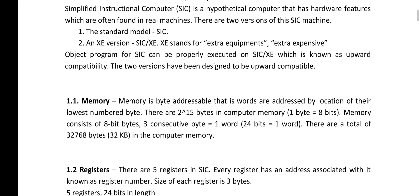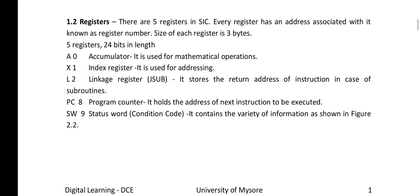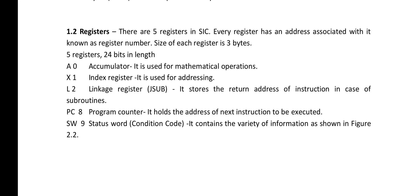The next component of SIC Machine Architecture is registers. There are 5 registers in SIC, and every register has an address associated with it known as a register number. The size of each register is 3 bytes — 5 registers with 24 bits in length. The first register is A with register number 0. A stands for accumulator, and this accumulator register is used for mathematical operations. The second register is X with number 1; this index register is used for addressing. The third register is L with number 2, which is the linkage register, also called JSUB, and is used to store the return address of an instruction in case of subroutines.